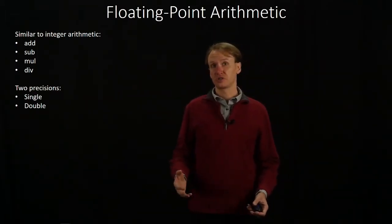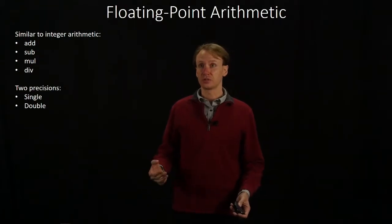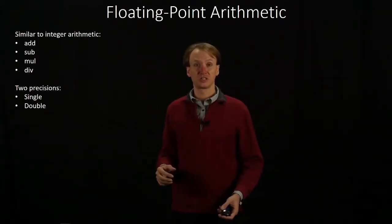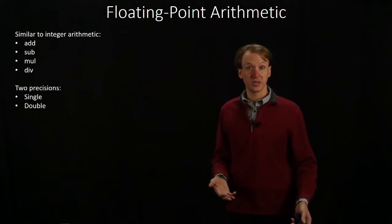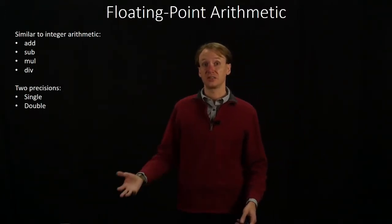We have two options for the precision of our floating-point values: single-precision and double-precision. Single-precision has 32 bits, double-precision has 64 bits.